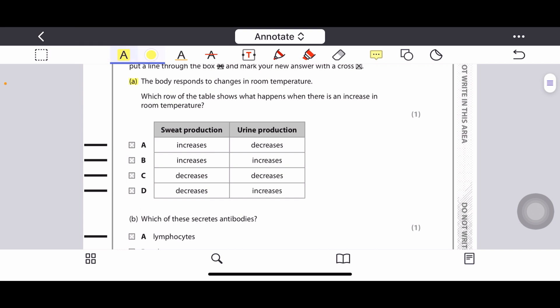Question number 1a: The body responds to change in room temperature. Which row of the table shows what happens when there is an increase in room temperature? If there is an increase in room temperature, then sweat production will be increased and less urine will be produced to retain water in the body. So the correct answer will be sweat production increases and urine production decreases. Option A is the right answer.